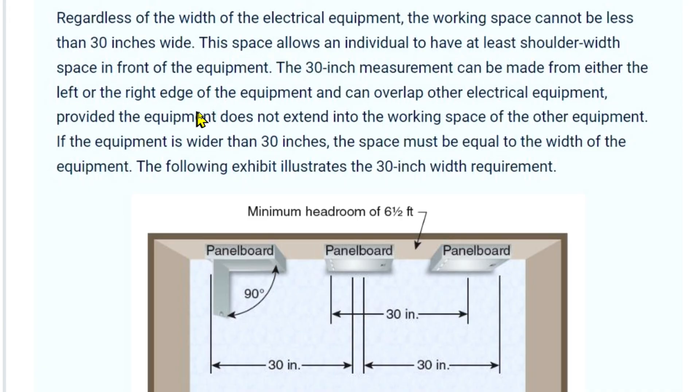And can overlap other electrical equipment provided the equipment does not extend into the working space of the other equipment. If the equipment is wider than 30 inches, the space must be equal to the width of the equipment. The following exhibit illustrates the 30 inch width requirement.